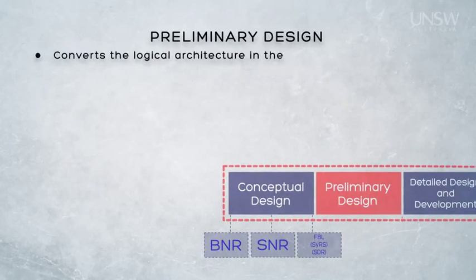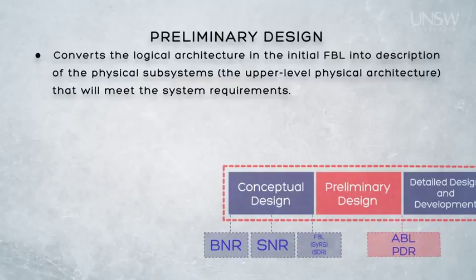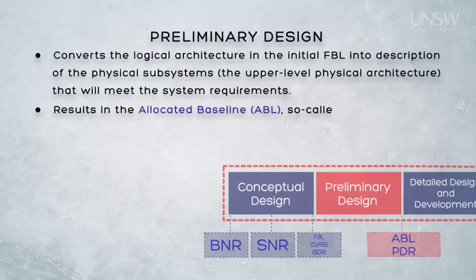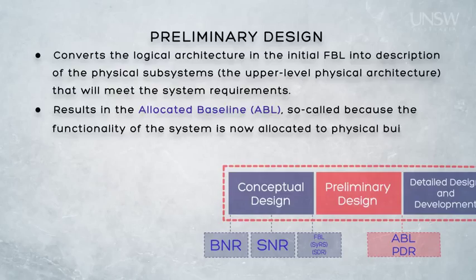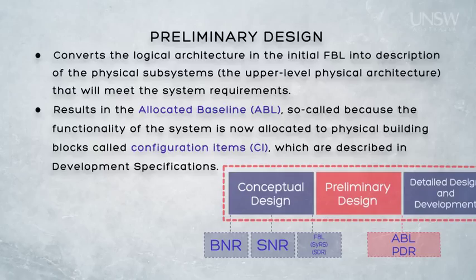The aim of preliminary design is to convert the functional baseline into an upper-level physical description of the system — that is, we describe the hows of the system. Preliminary design is therefore the stage where the logical design is translated into the physical design, shifting focus from the problem domain to the solution domain, and most likely from the customer to the contractor. The result is a sub-system level design known as the allocated baseline, where functions are grouped into configuration items, with development specifications containing sub-system level requirements. The activity completes with the preliminary design review, or PDR.